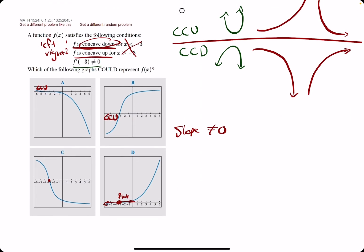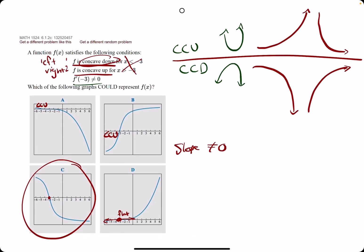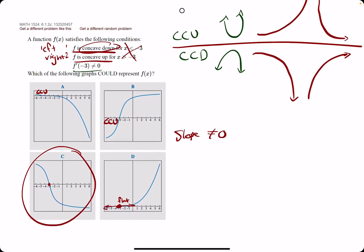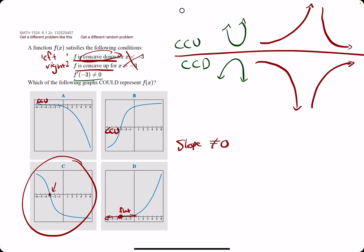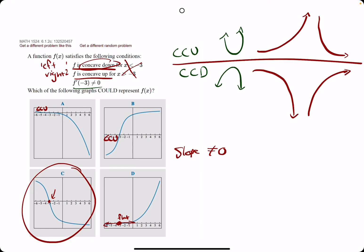And so for the graph that starts concave down and then changes to concave up, and has a slope not equal to zero at negative three, C is our best option.